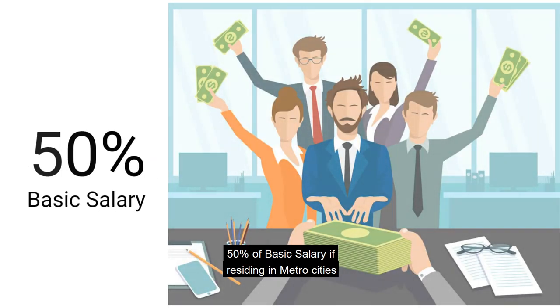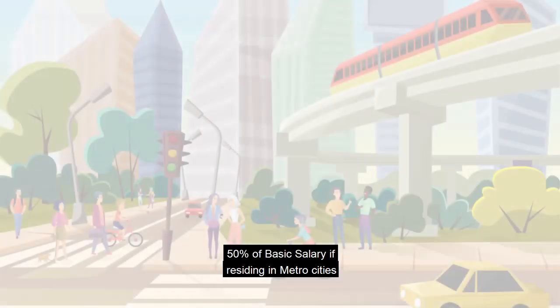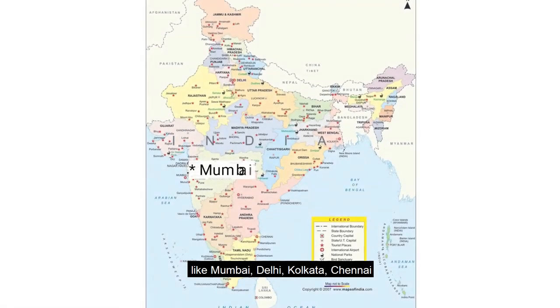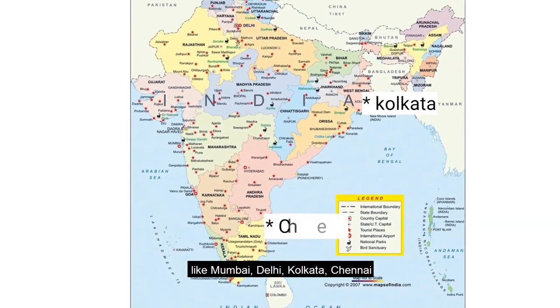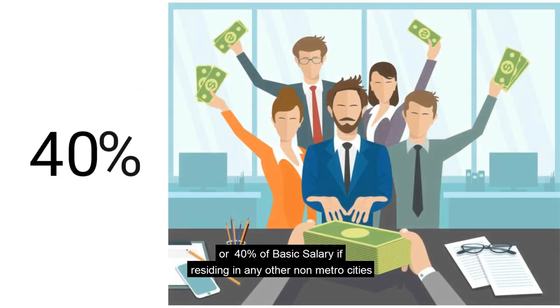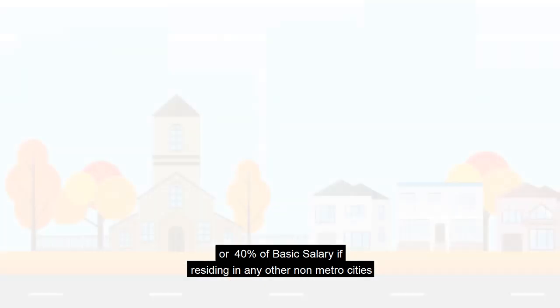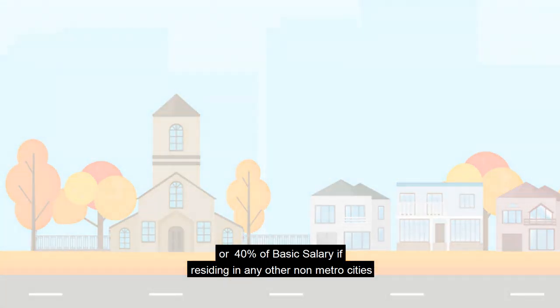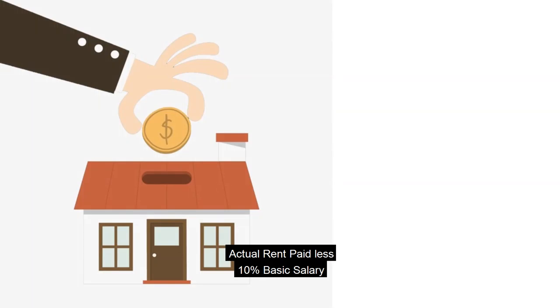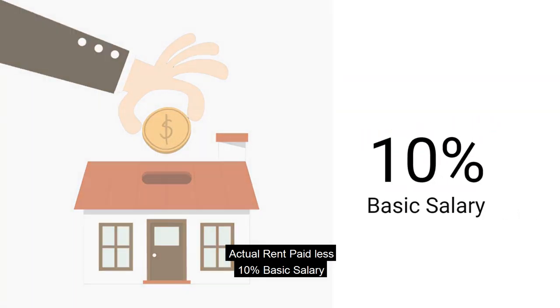Number two: 50% of basic salary if residing in metro cities like Mumbai, Delhi, Kolkata, Chennai, or Bangalore; or 40% of basic salary if residing in any other non-metro cities. Number three: actual rent paid less 10% of basic salary.